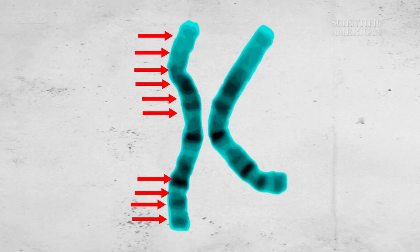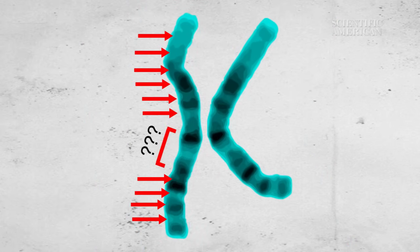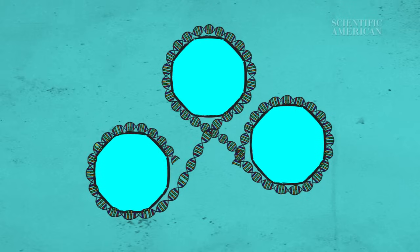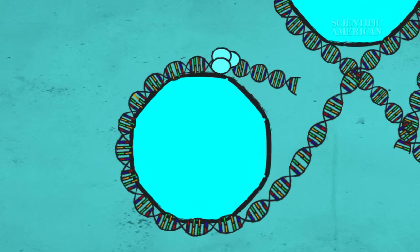Chromosomes contain many genes along with long stretches of DNA whose purpose we've yet to figure out. In order to make a protein, DNA has to be unwound from its histones.